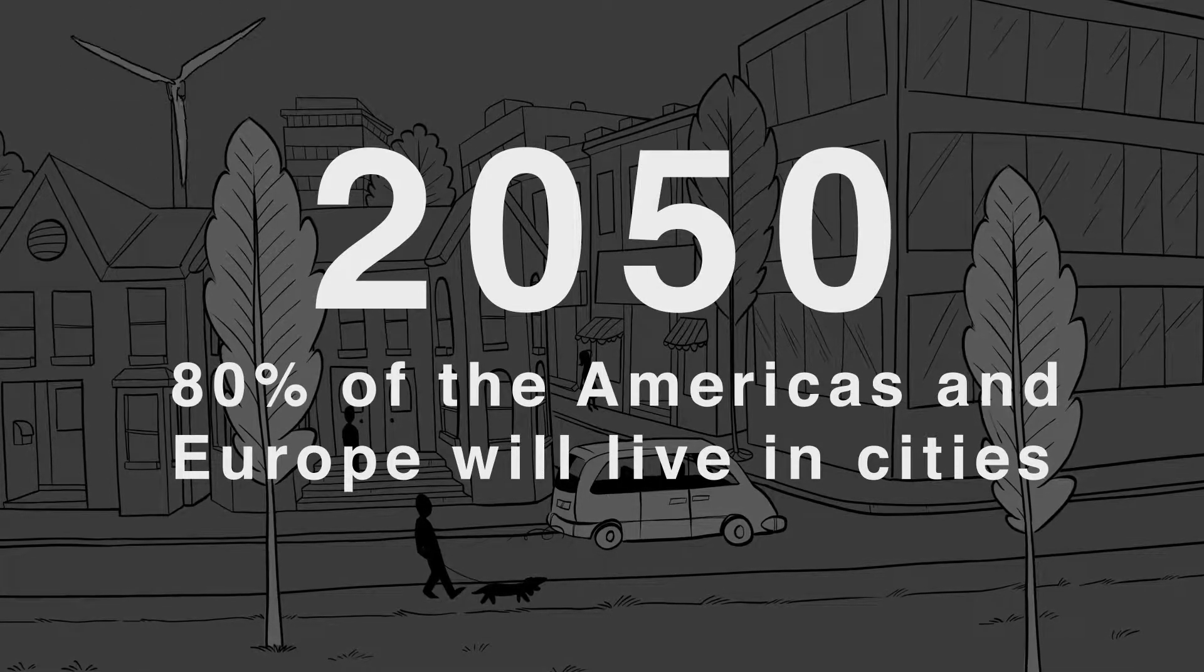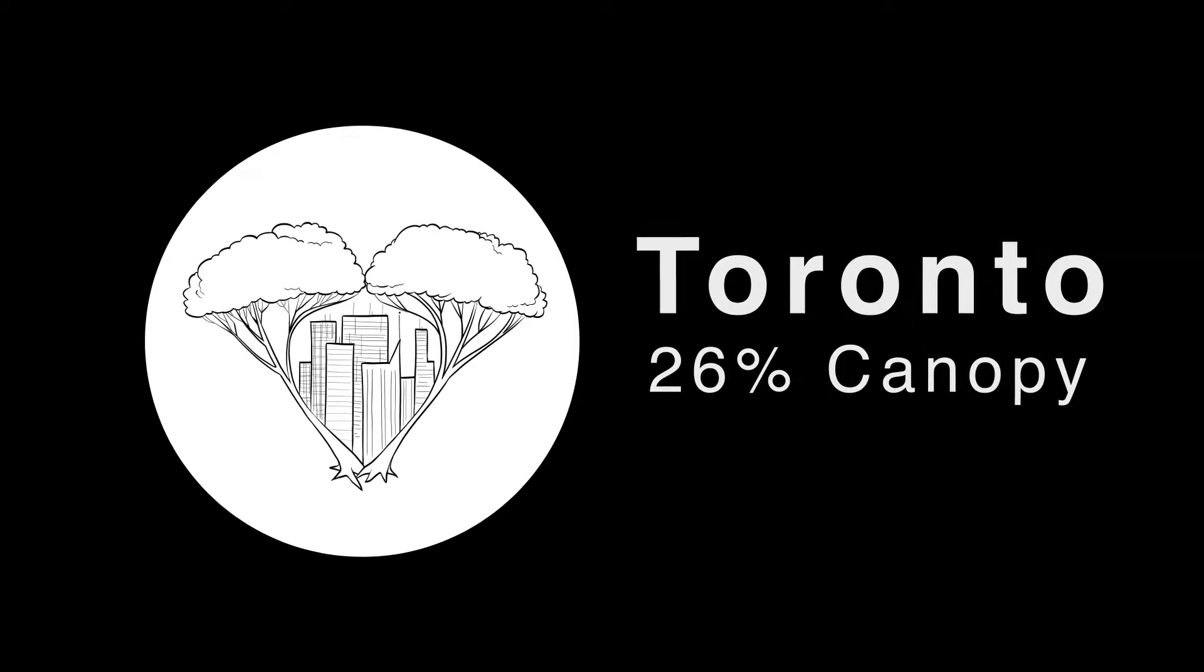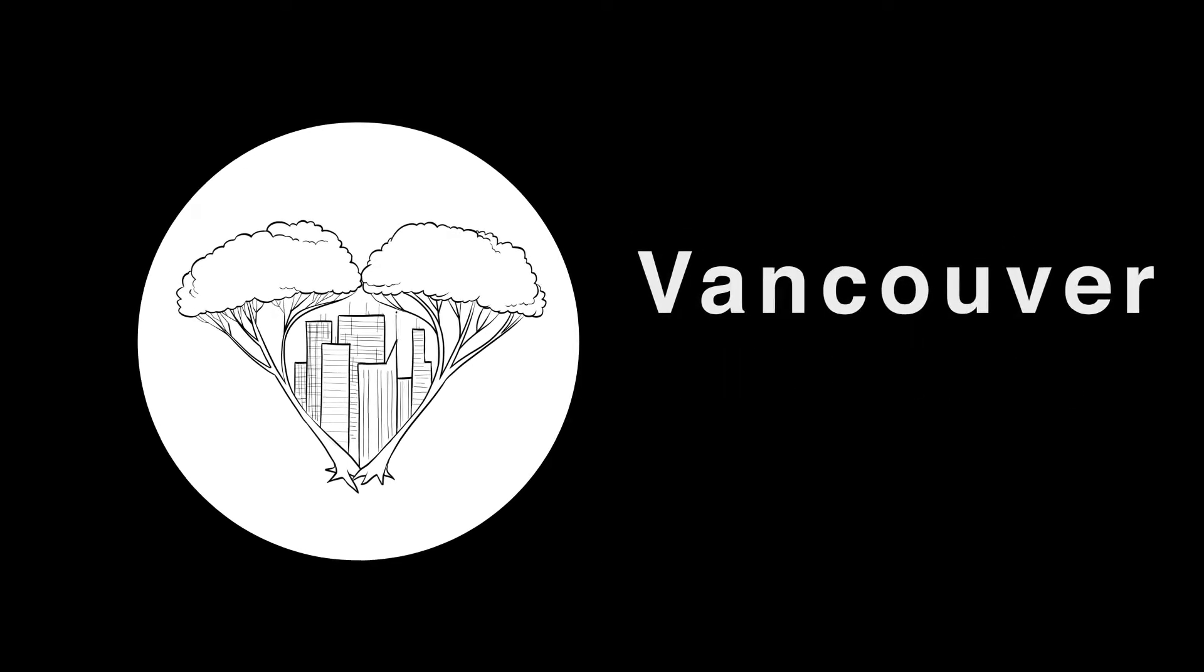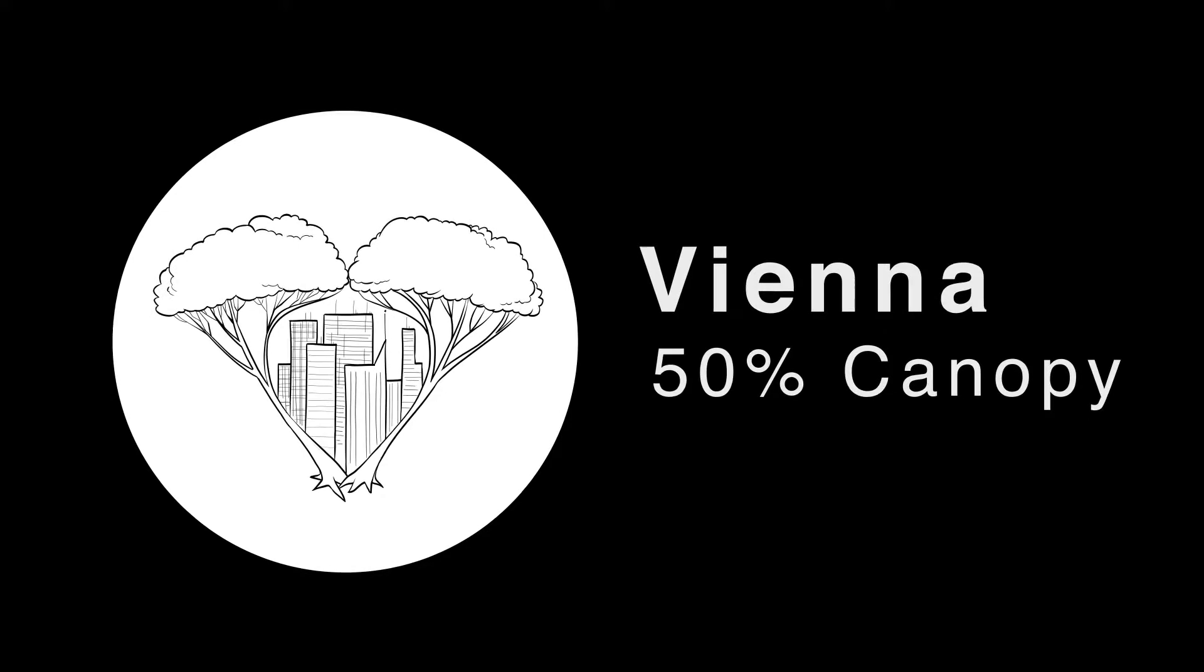Healthy trees will be highly valued in these communities. The City of Toronto has a 26% canopy cover, and Vancouver has recently dropped to 18%. But the City of Vienna in Austria has a 50% canopy, which is probably the densest tree cover we can expect in a city.